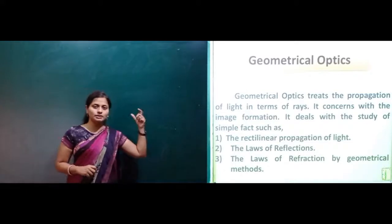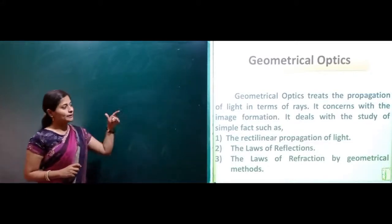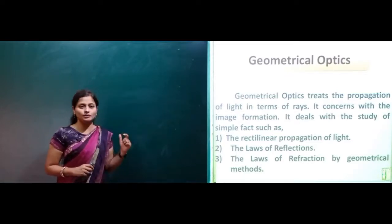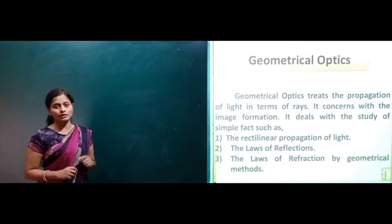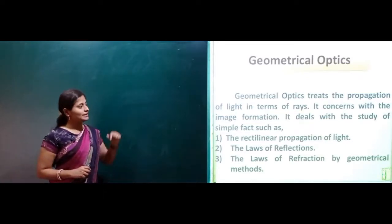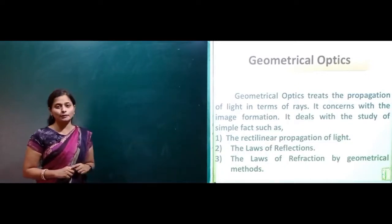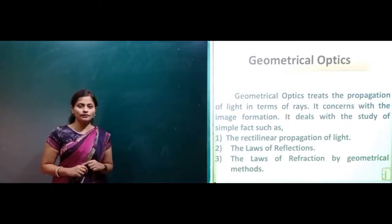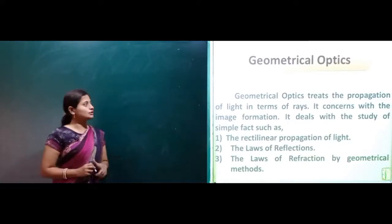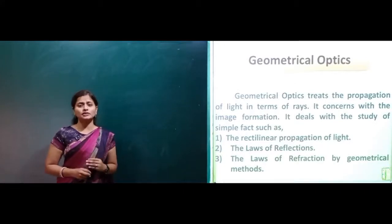Now we will see the definition of geometrical optics. Geometrical optics treats the propagation of light in terms of rays. It is concerned with image formation. It deals with the study of simple facts such as the rectilinear propagation of light, the laws of reflection, and the law of refraction by geometrical method.